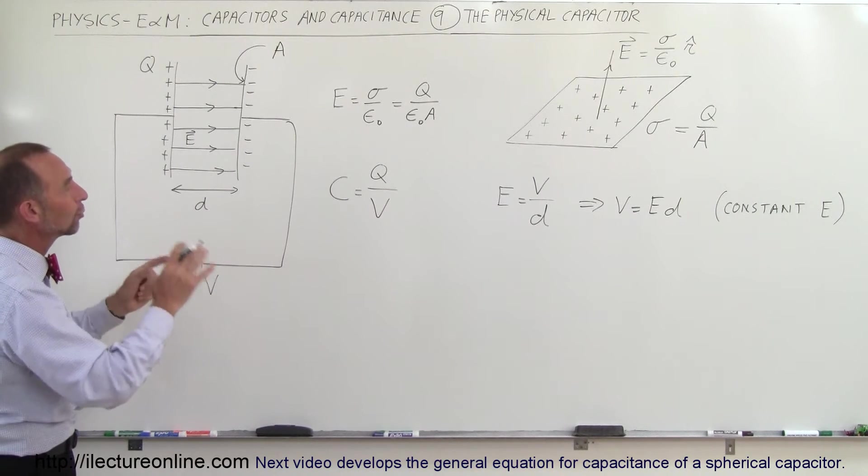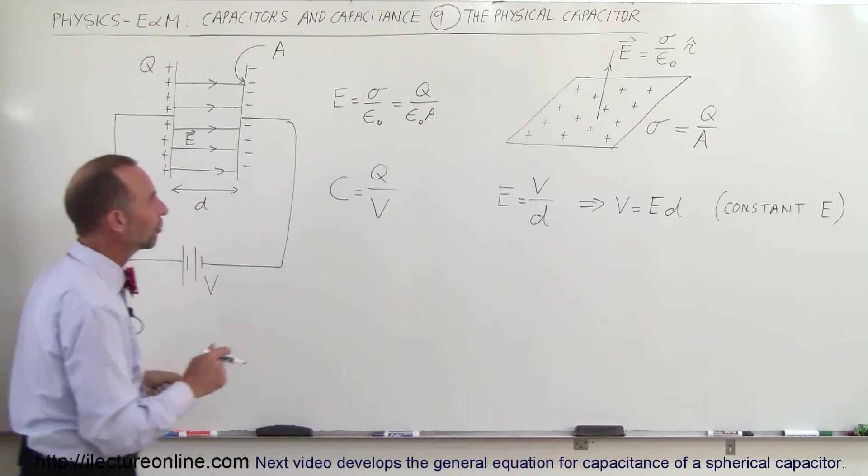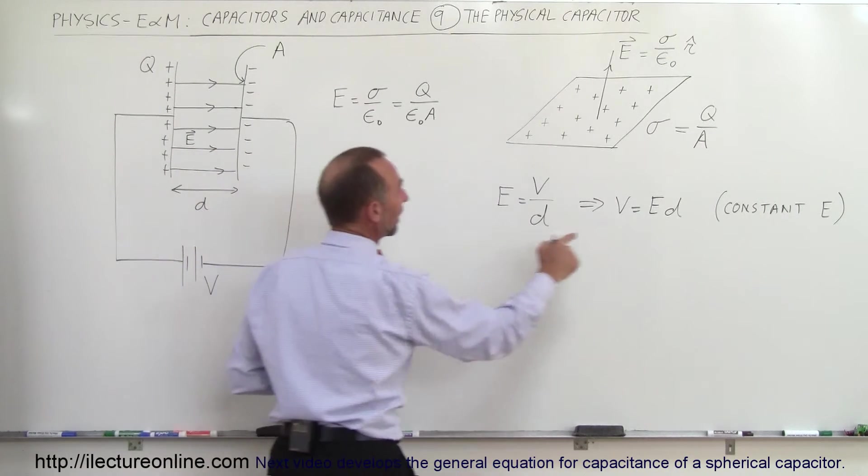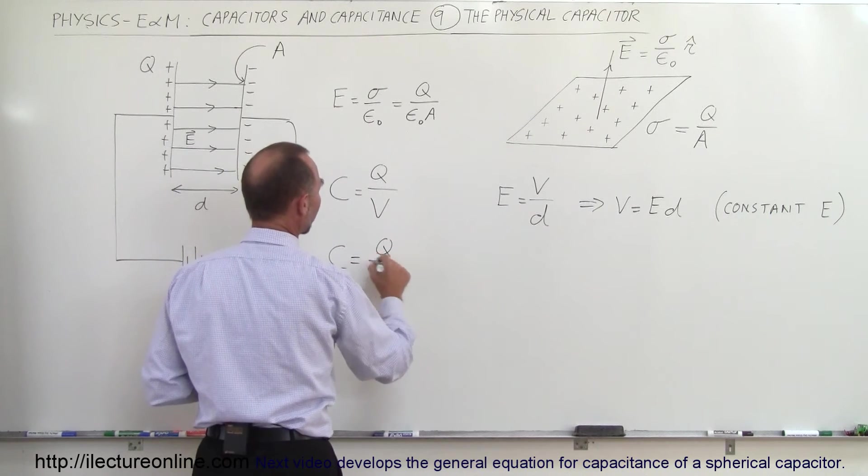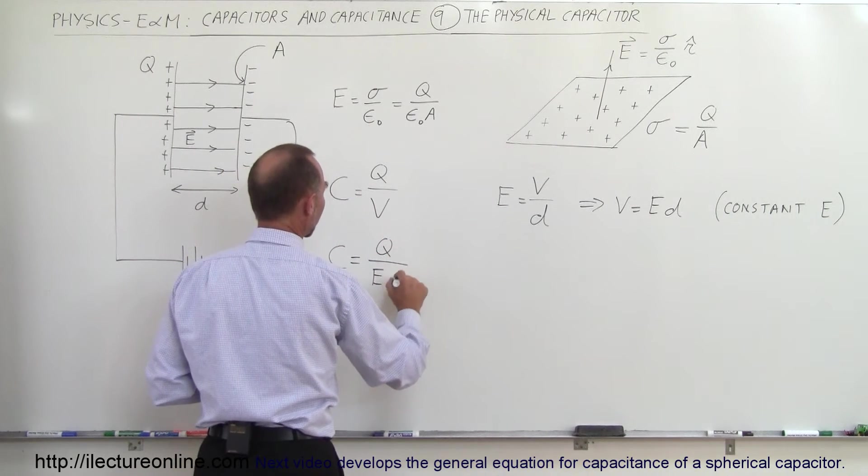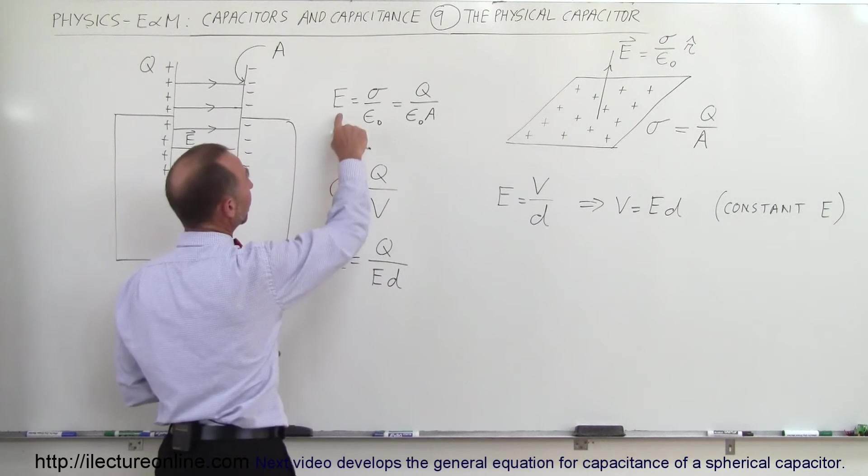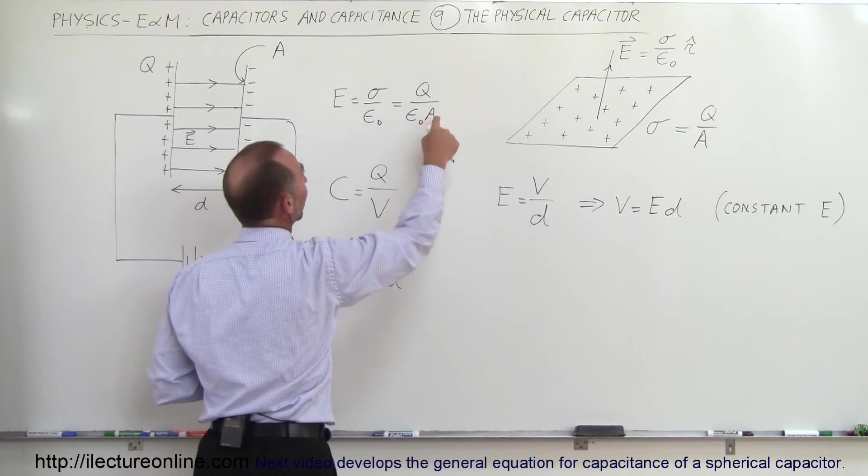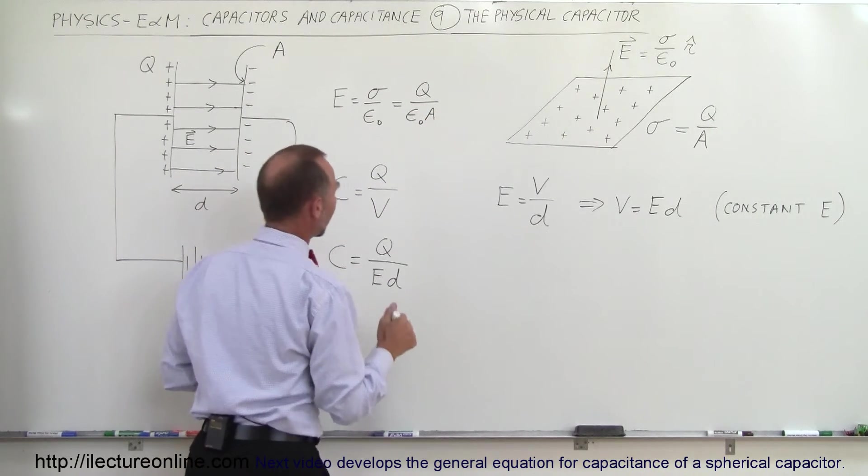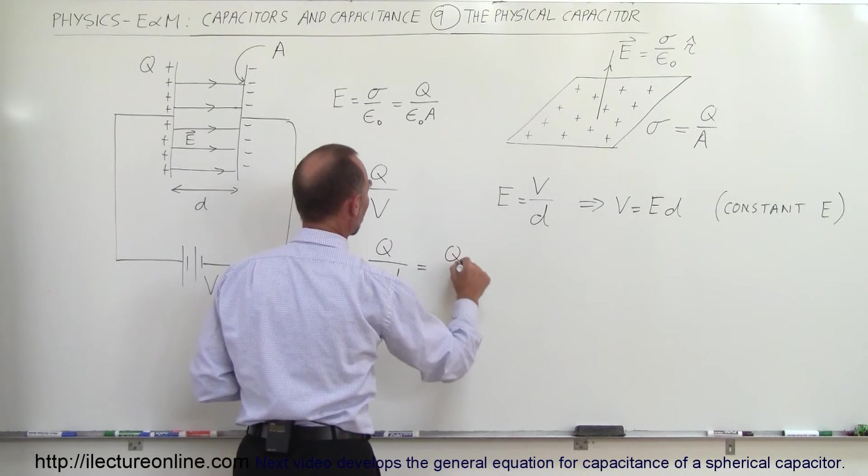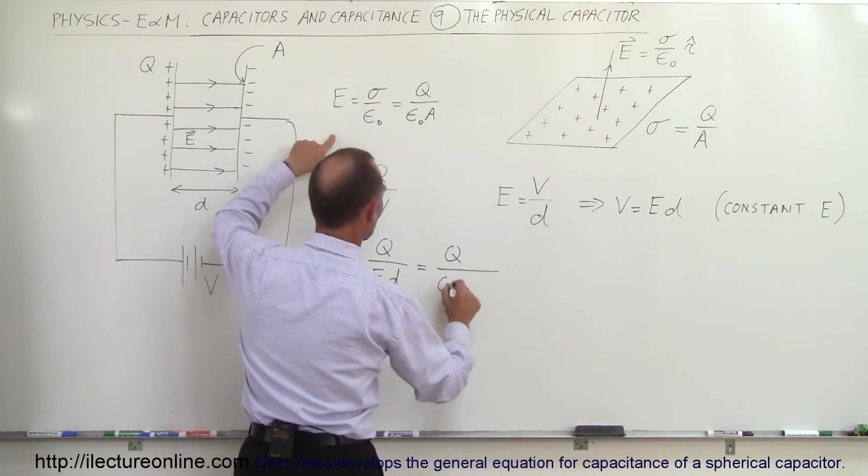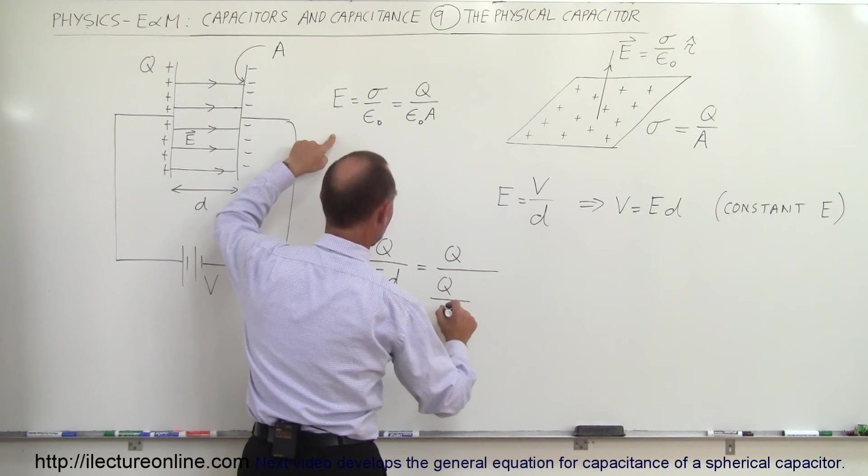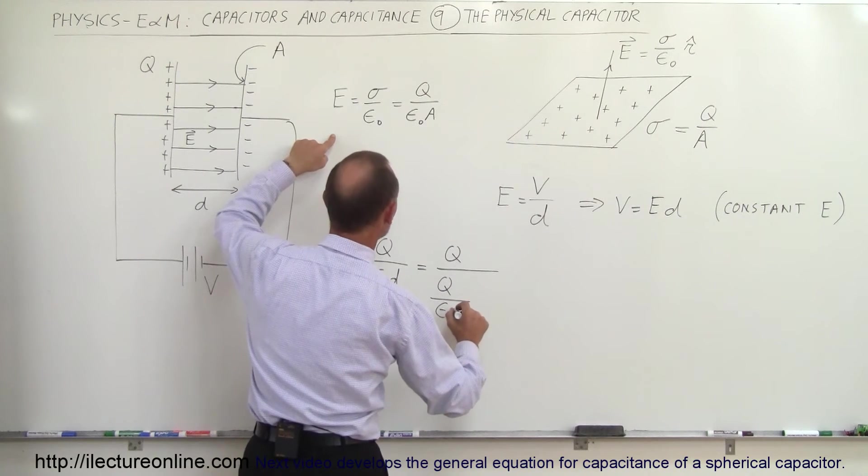Now how can we combine those two? Well, first of all, we can replace V by E times D. So C is equal to Q divided by the electric field strength times D. And the electric field strength can be replaced by Q divided by epsilon sub-naught times A. So this can be written as Q divided by E, which is Q divided by epsilon sub-naught times A.